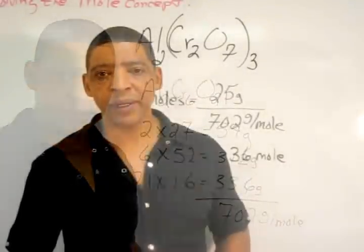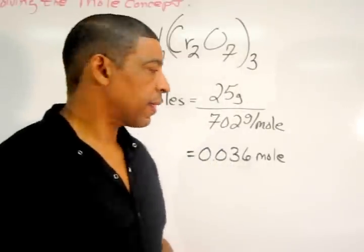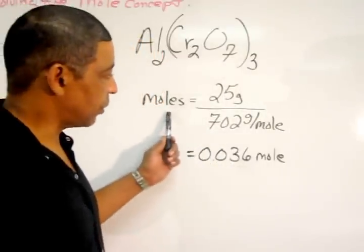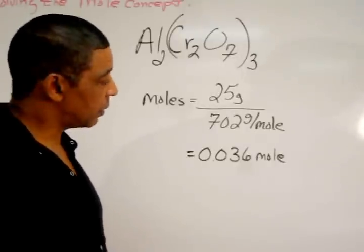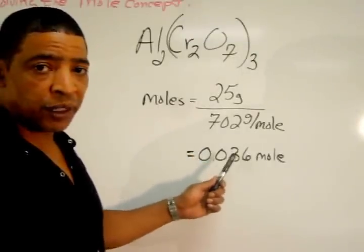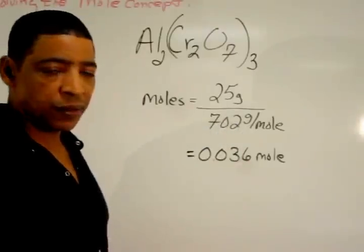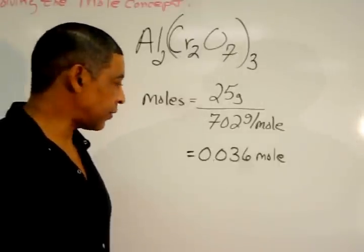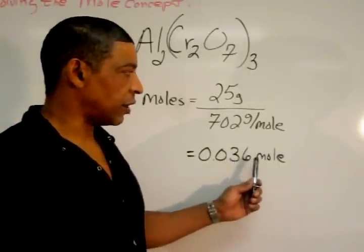At this point, determining the moles is a simple matter of using the formula, where moles is equal to the given mass, which in this case was 25 grams, divided by the gram formula mass, or molar mass, which is 702 grams per mole. This gives a final answer of 0.036 mole.